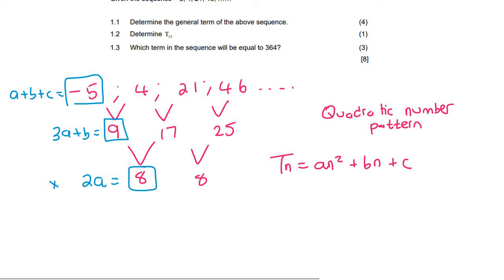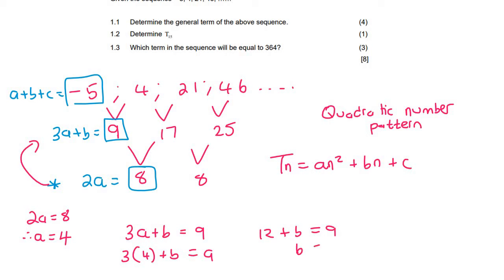So you start at the bottom. If we can say that 2A is equal to 8, then it means therefore A will be equal to 4. Now we can go up one level, so we can say 3A plus B equals 9, but now we have A. So we can say 3 times 4 plus B is equal to 9, and so that's going to be 12 plus B equals 9, and so B is equal to negative 3.